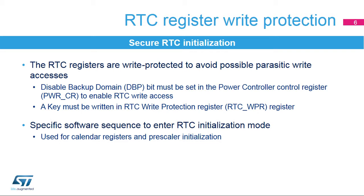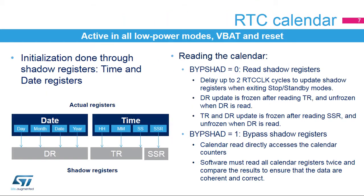Initialization mode must be entered in order to change the clock prescaler values or the calendar value. The RTC calendar keeps running in all low-power modes, in VBAT mode, and during reset. Initialization of the time and date registers is performed through their shadow registers, which are in the APB clock domain. The sub-second register cannot be initialized.